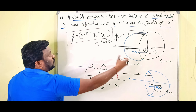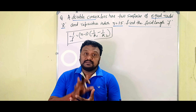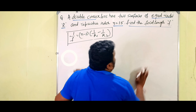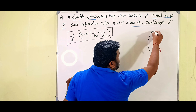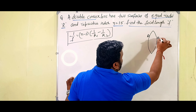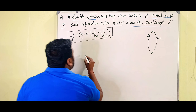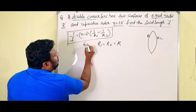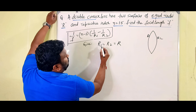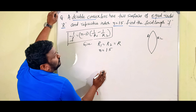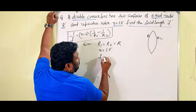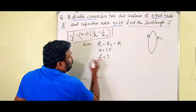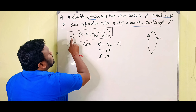From the problem: the convex lens has two surfaces of equal radii, so r1 = r2 = r. The refractive index n = 1.5. We need to find the focal length f. Remember for a convex lens: r1 = +r and r2 = −r.